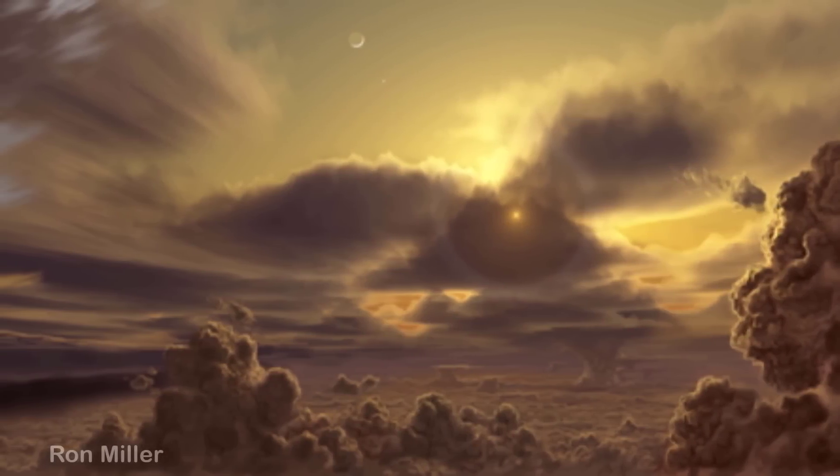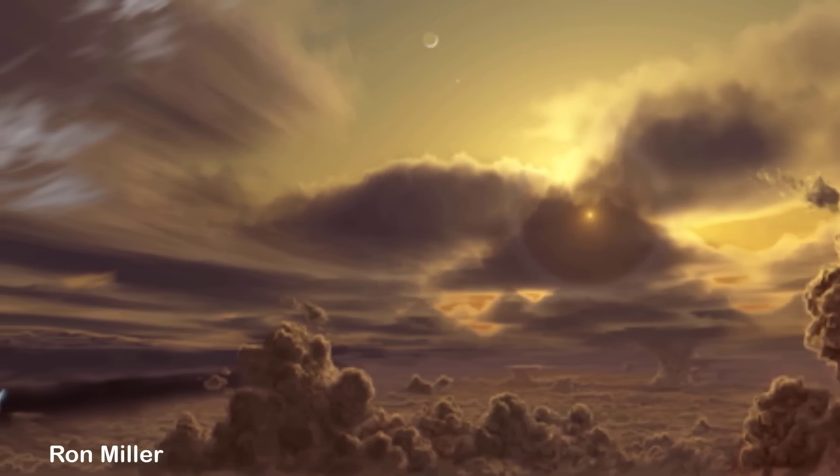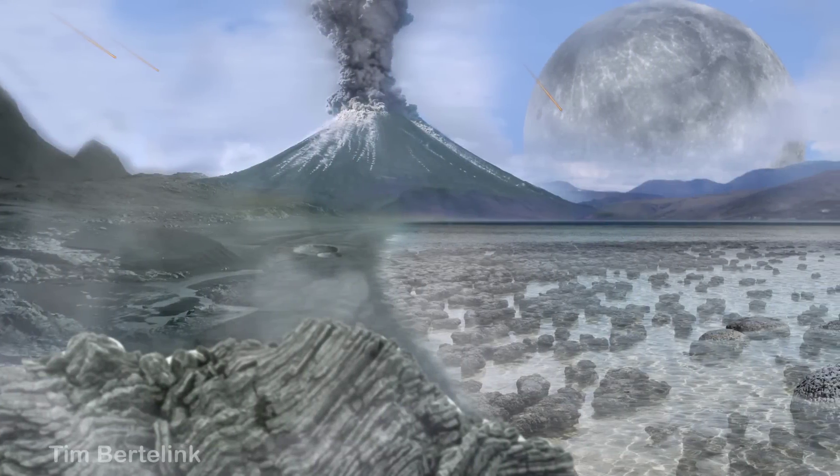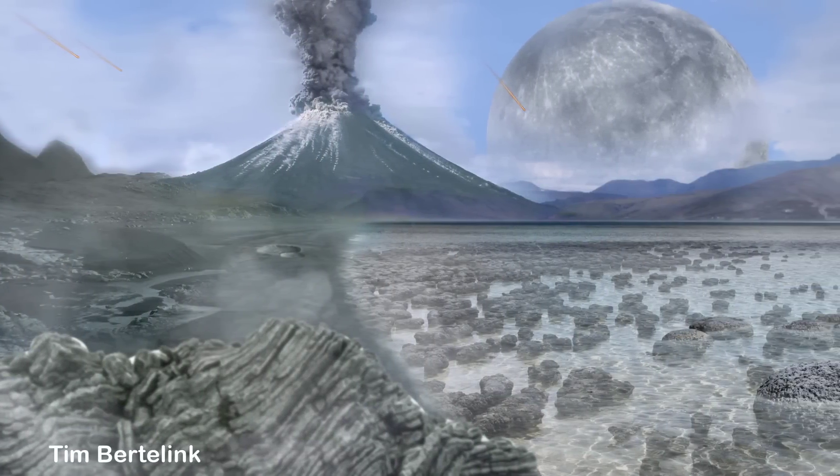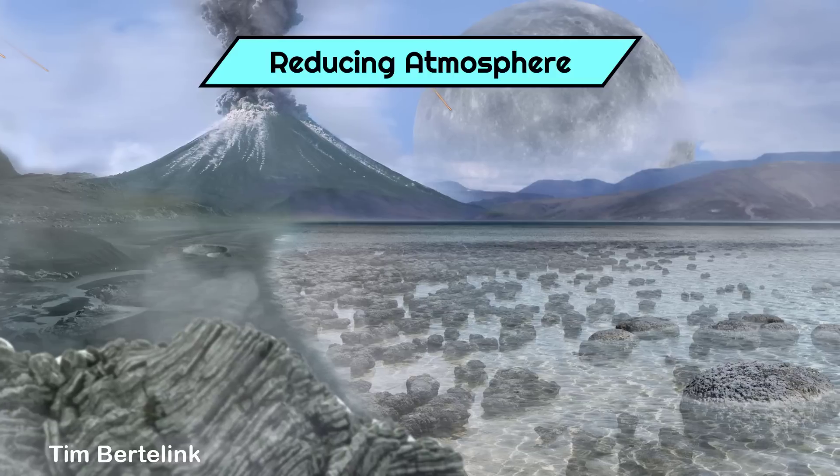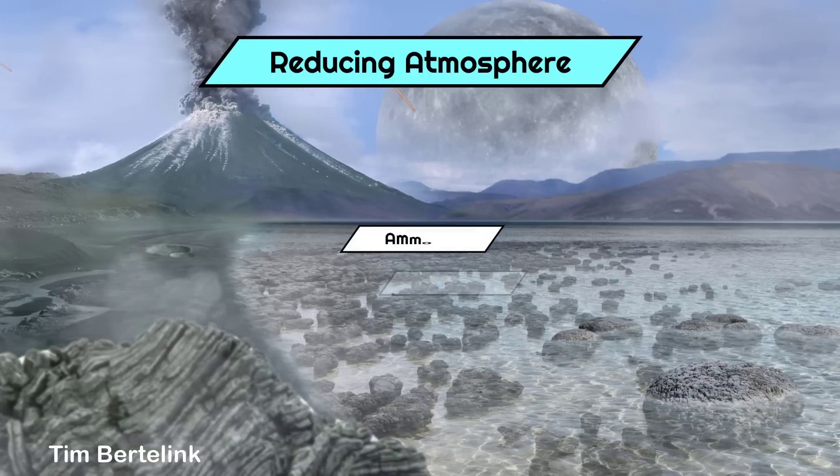However, as the two scientists noted, Jupiter's atmosphere is actually quite similar chemically to Earth's early atmosphere, which was dominated by hydrogen and therefore reducing rather than oxidizing, forming simple compounds like ammonia and methane.